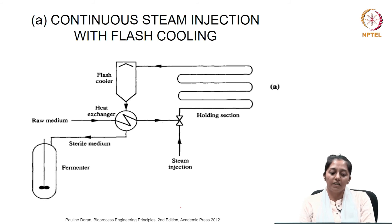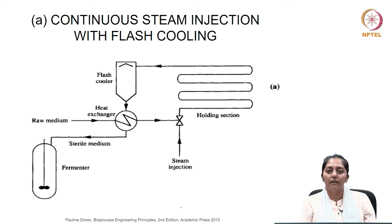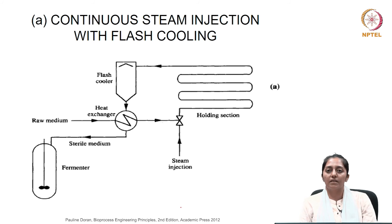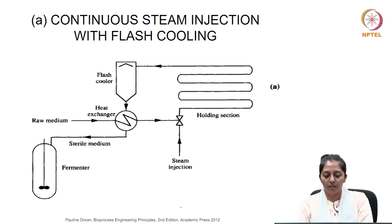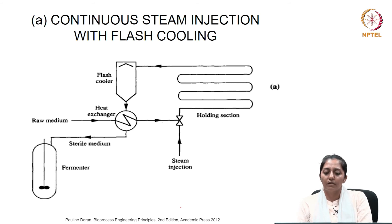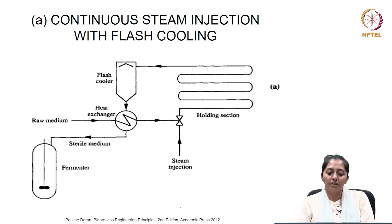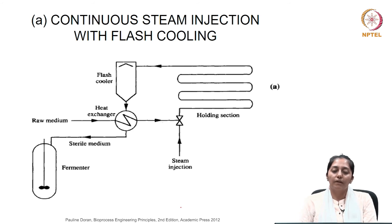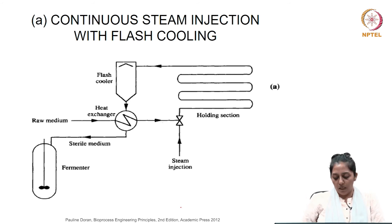There is a heat transfer between the already-sterile medium and the raw medium going for sterilization. In this process, the sterile medium gets cooled and can then at the required temperature be fed into the fermenter for fermentation, while the raw medium gets heated up to economize the use of steam. Then there is direct steam injection. Once it reaches the sterilization temperature, it passes through the holding section where the holding time is governed by the length of this section, and then it is very quickly brought down to low temperatures using a flash cooler, where it expands to bring down the temperature.